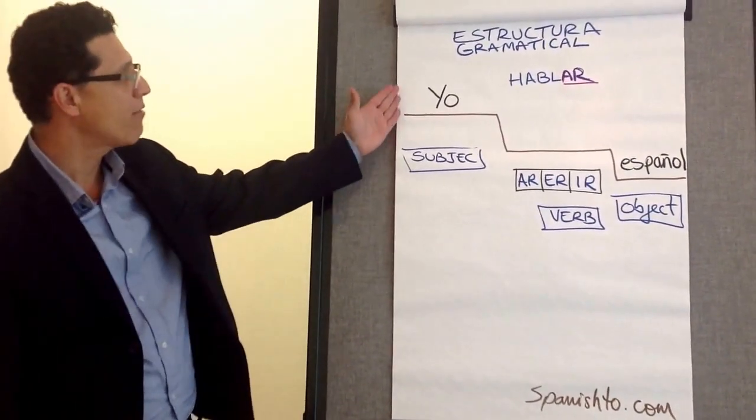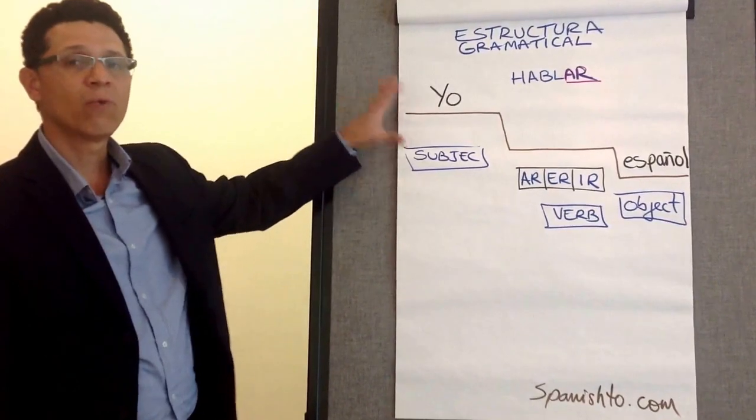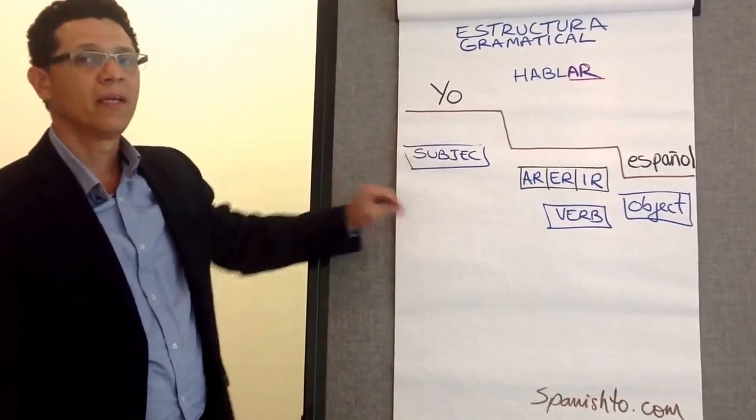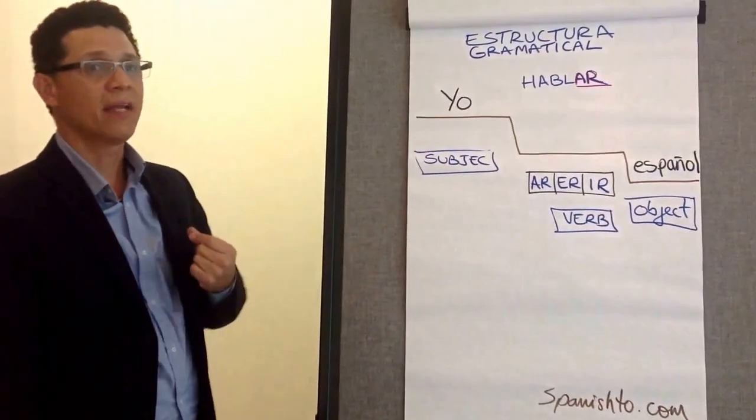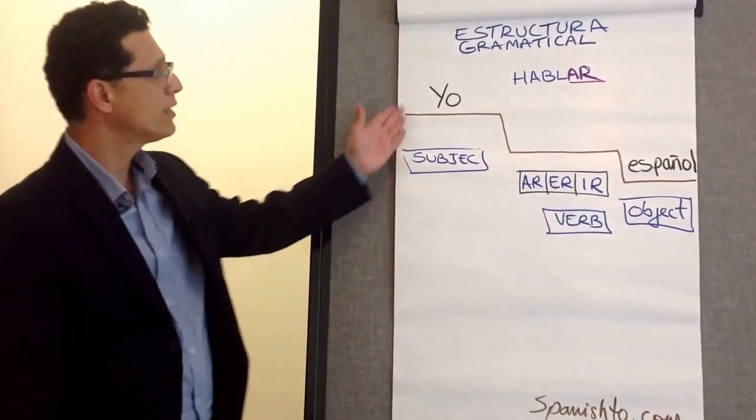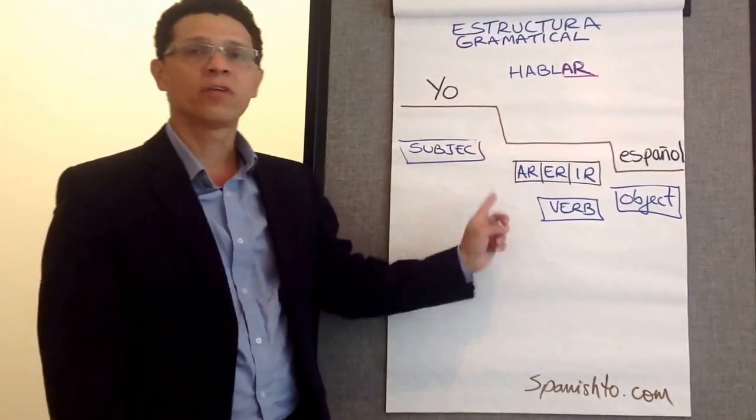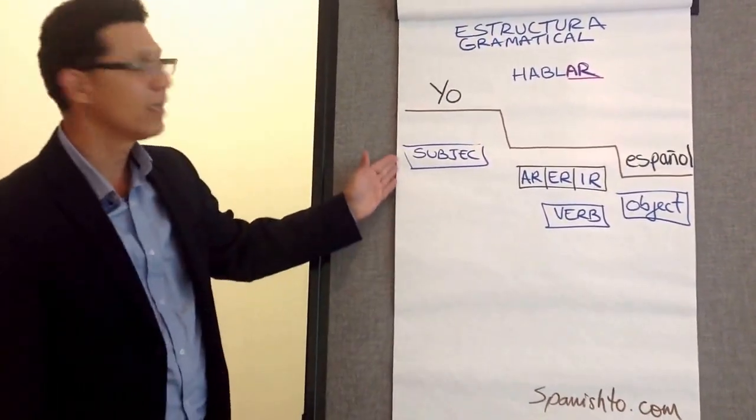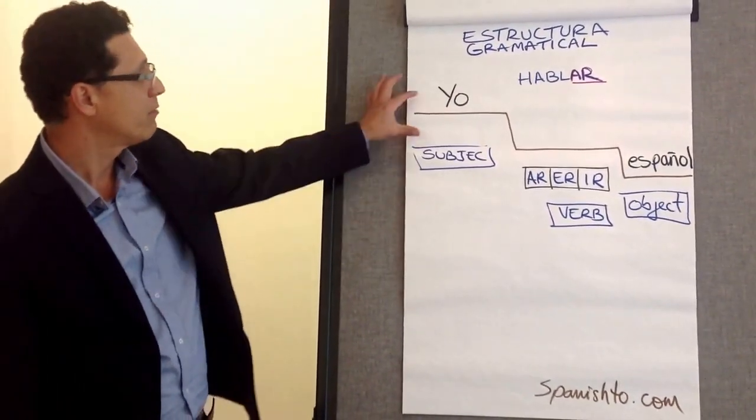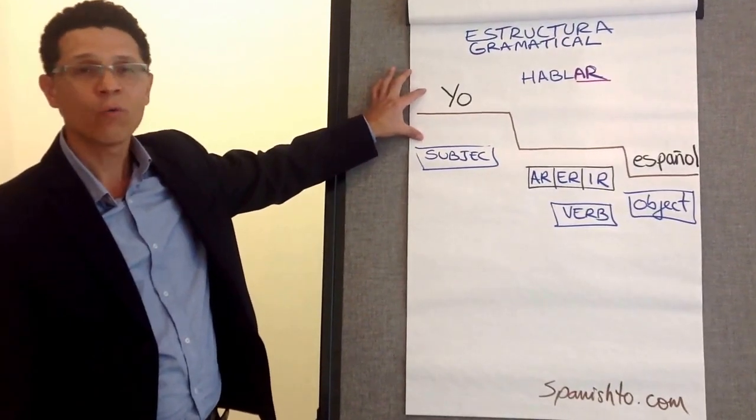Okay, so I have here a picture of what a sentence should be like in Spanish and actually in any language. You will always have three elements and I drew a staircase to show you the two dimensions so you can see it better. The first part of the sentence is always a subject.